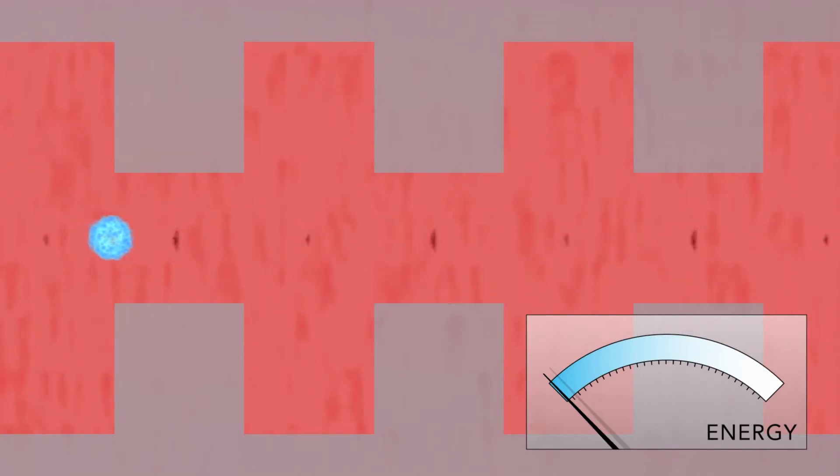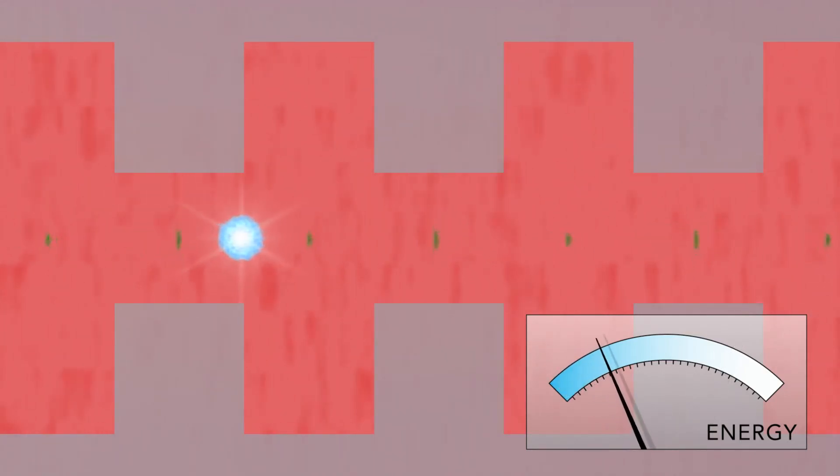Electrons traveling through the patterned channel now receive a big energy boost from the electric fields between the ridges and lose only a little energy as they pass through the smaller gap fields. The net result is a significant energy gain for those electrons that are perfectly timed with the laser light waves.